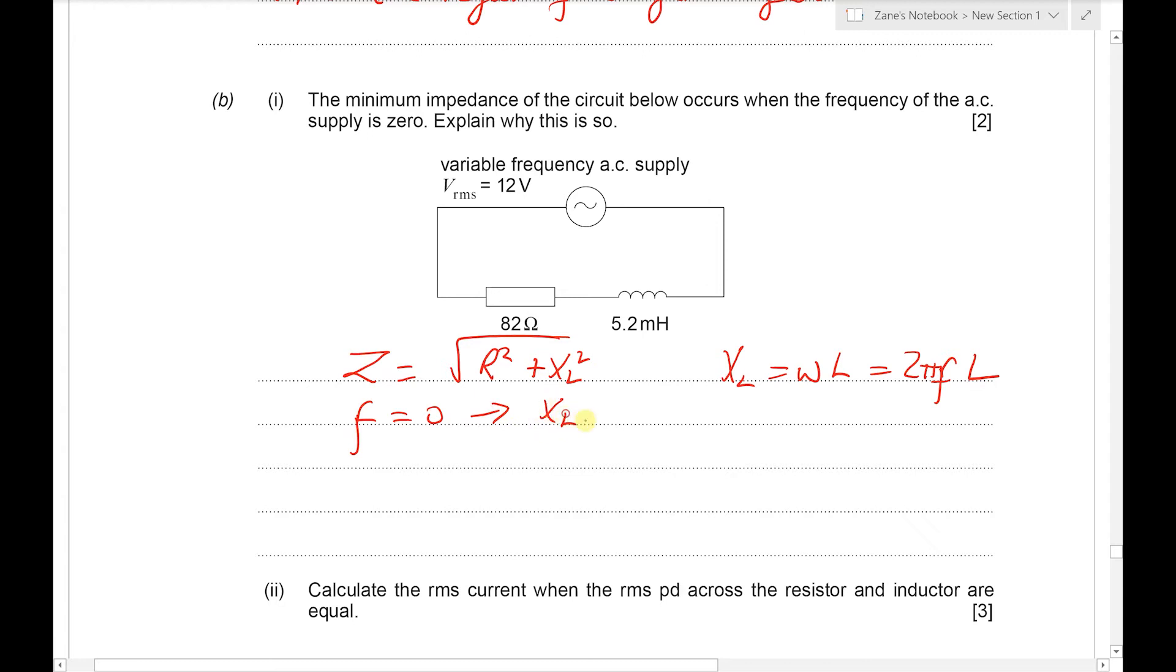And therefore in that case Z will be equal to the square root of R² which is just R, and is a minimum. It's as small as it can possibly be. At any other stage we would be adding on the reactance of the inductor to the impedance to give a bigger impedance than just R.